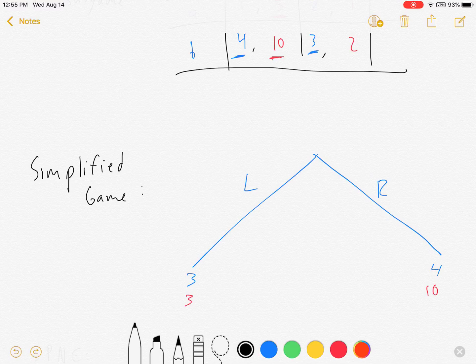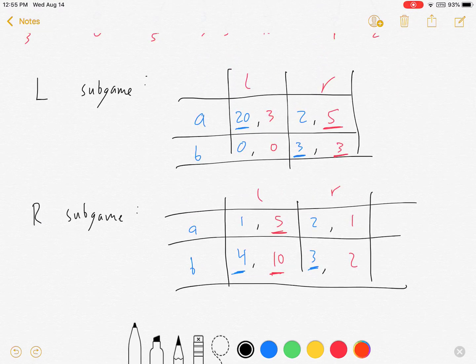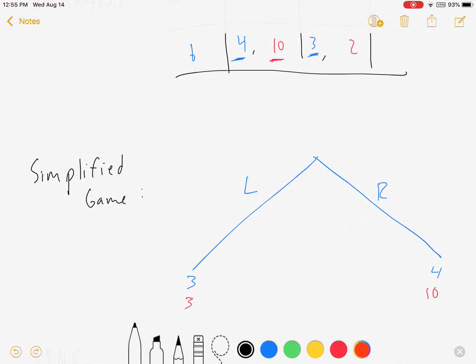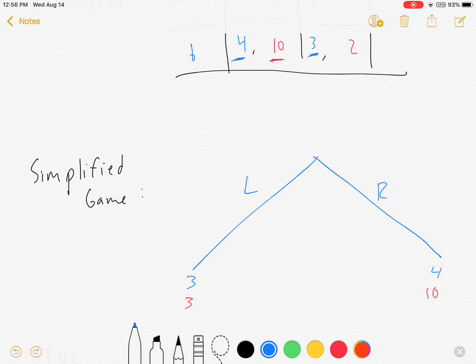So I can simplify my game using these payoffs. If I go left, we're going to wind up at this 3-3 outcome. Now, if I go right, we're going to end up at this 4-10 outcome. And that's really easy to choose for blue. 4 is greater than 3. So blue will go right.